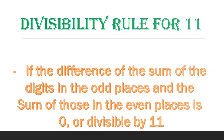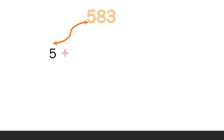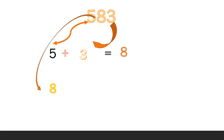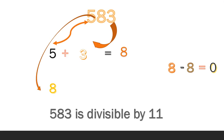For 583, the digits in the odd places are 5 and 3. Get the sum: 5 plus 3 equals 8. The digit in the even place is 8. Then get the difference of the sums: 8 minus 8 equals 0. Since the difference is 0, therefore 583 is divisible by 11.